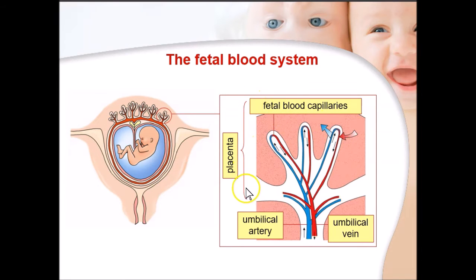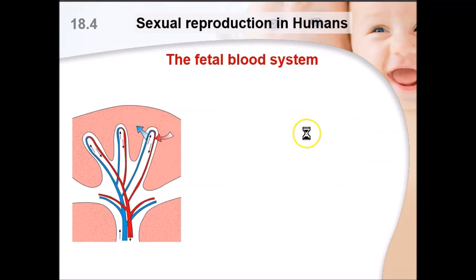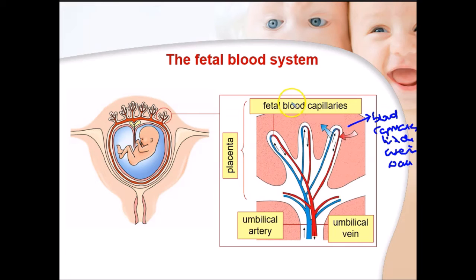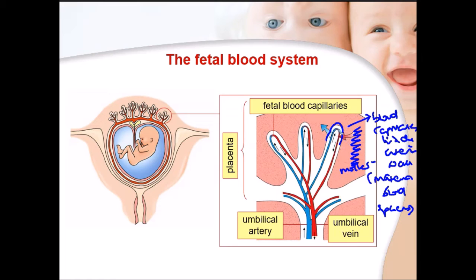The placenta is made up of the fetal blood capillaries, the embryonic villi, and the mother's uterine wall. The uterine wall is very thick with blood capillaries, but the blood capillaries inside it are not fetal — they are called maternal blood spaces. The mother's blood capillaries belong to her, and you can clearly see they are separated from the fetal blood capillaries. We will talk about the significance of this separation.